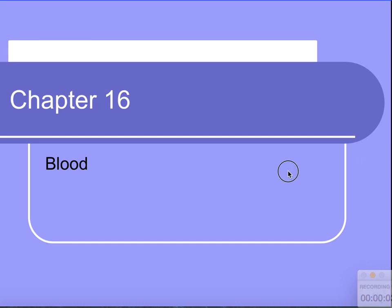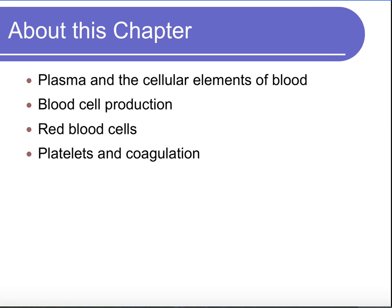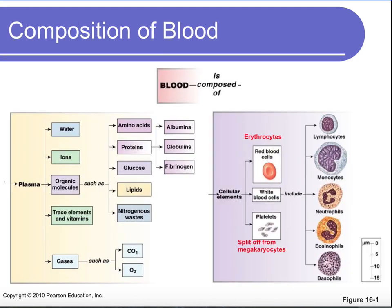Chapter 16: Blood. In this chapter, we're going to talk about the components of blood — plasma and cellular elements. We'll discuss blood cell production and specifically look at red blood cells and platelets and how they're involved in blood clotting or coagulation.